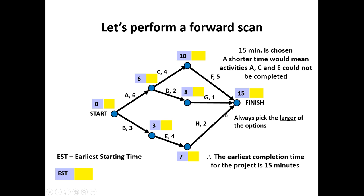When you have one, two, three, or more options, multiple options coming into a final vertex, or any vertex for that matter, a node, you have to pick the larger of these options when you're performing a forward scan. So in this case, the earliest completion time for this project is fifteen minutes.